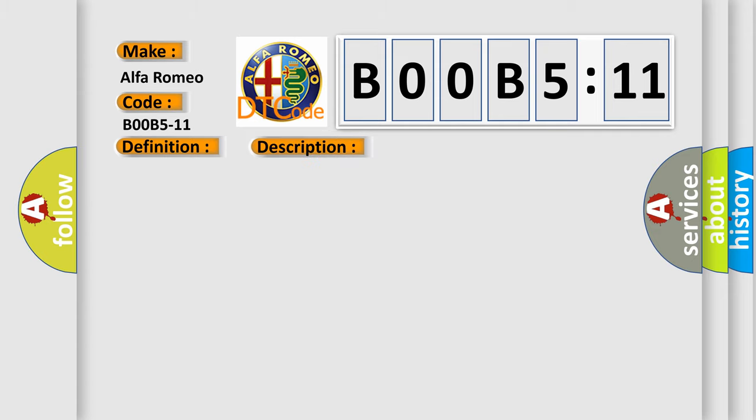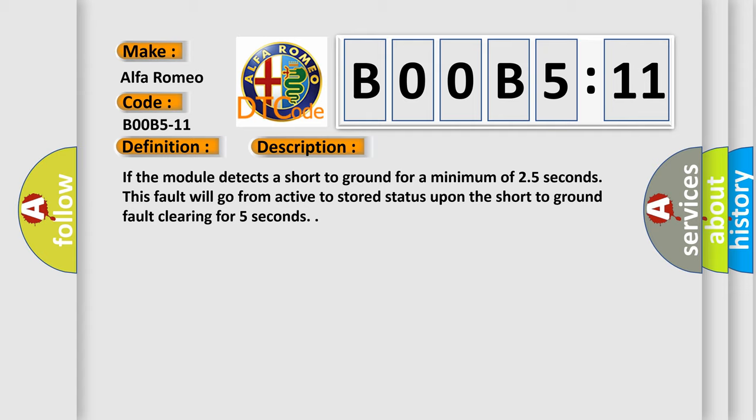Now this is a short description of this DTC code. If the module detects a short to ground for a minimum of 2.5 seconds, this fault will go from active to stored status upon the short to ground fault clearing for 5 seconds.